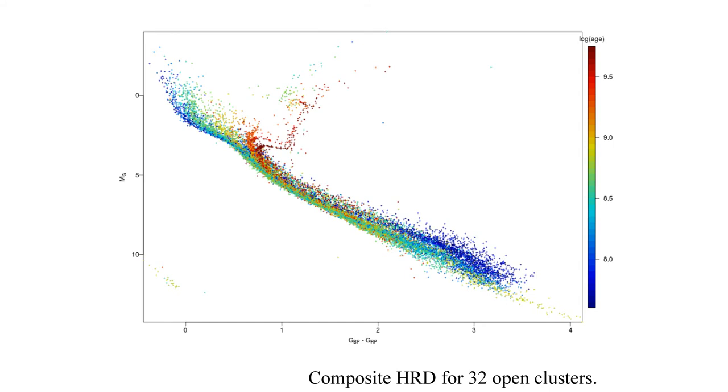We also have an equivalent composite HR diagram using globular clusters, where you see the strong change of the red giant branch shape with metallicity.